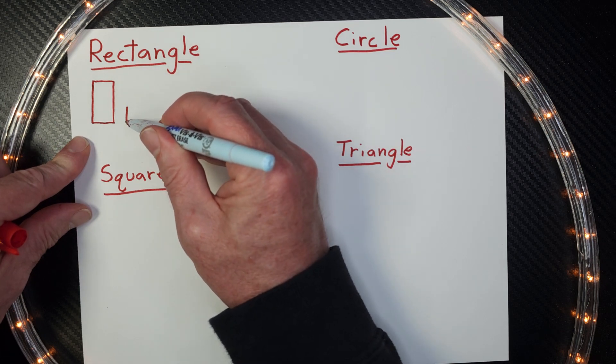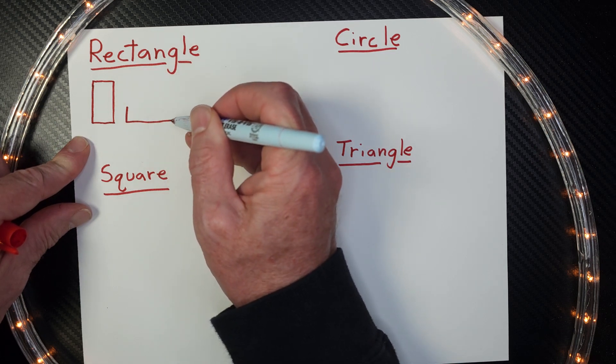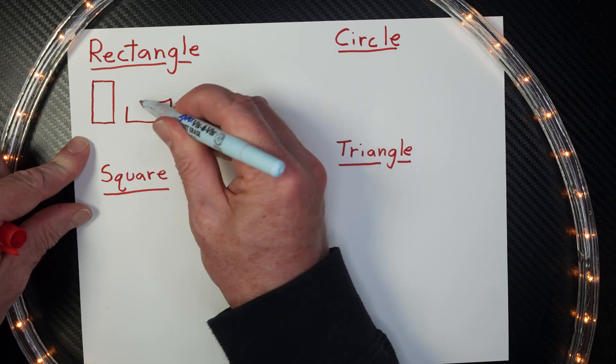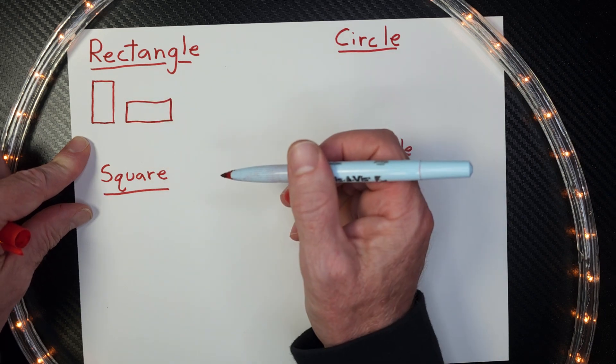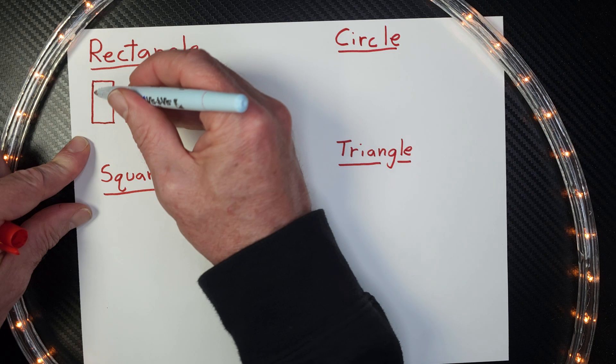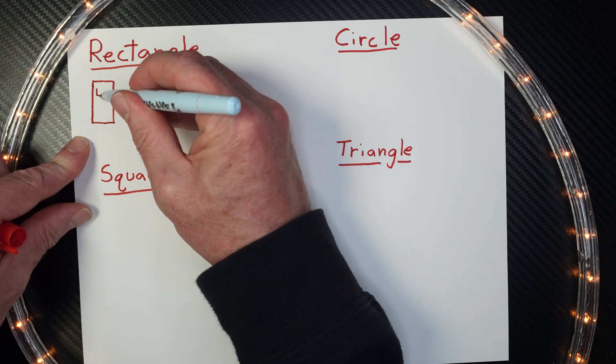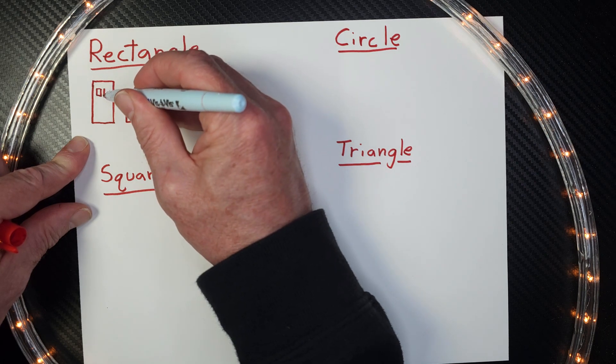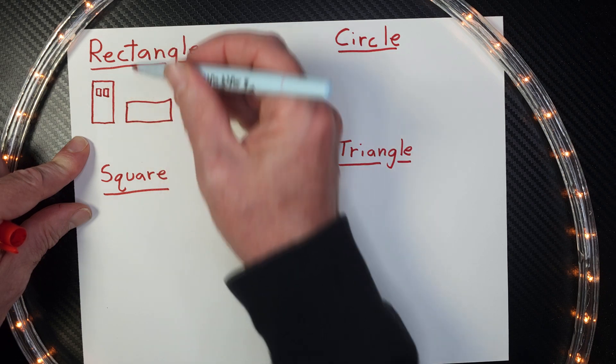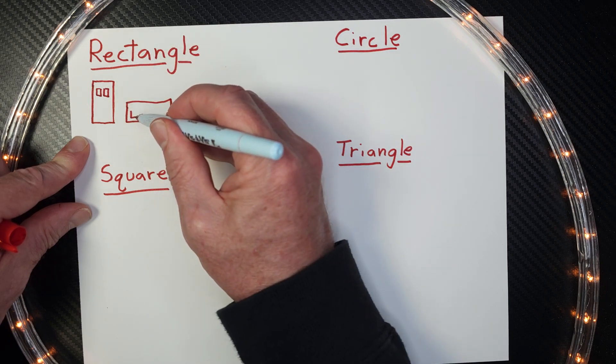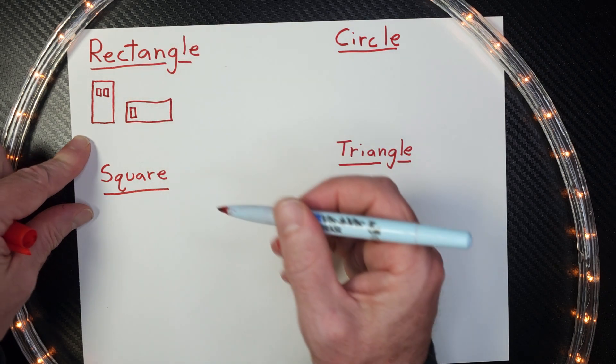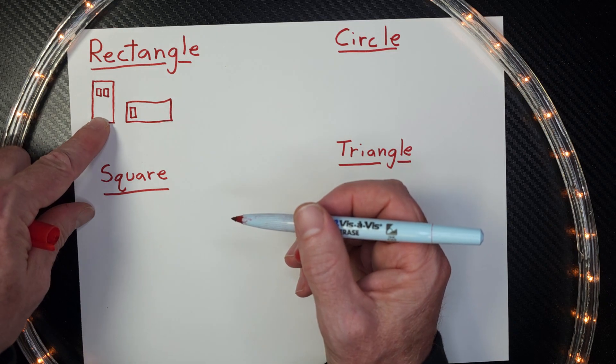Now, sometimes you might see a rectangle on its side like that. This is also a rectangle. You can even put a rectangle inside a rectangle just like that. Maybe you're making an apartment building or you're making a door. These are rectangles.